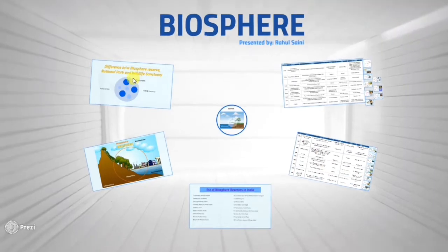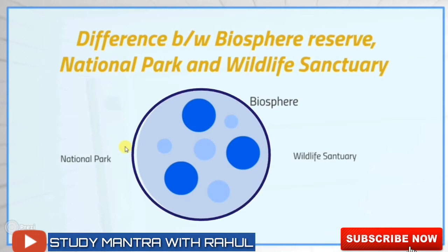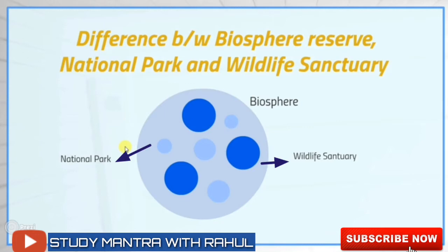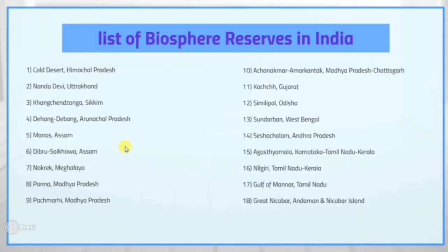What is the difference between biosphere reserve, national park, and wildlife sanctuary? A biosphere is a larger part of biodiversity — the larger circle you see on screen represents the biosphere, and the smaller circles are wildlife sanctuaries and national parks. Both wildlife sanctuary and national park are part of the biosphere and fall within it. In terms of area, biosphere is the largest, followed by wildlife sanctuary, and then national park.